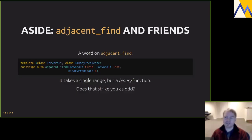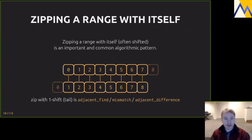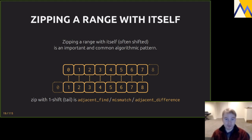As Conor's talks explain, many algorithms in the library are named in ways that obscure their true nature. adjacent_find takes a single range but a binary predicate because it's actually looping over two ranges: the range and the tail of the range. Zipping a range with itself is an important and common algorithmic pattern. adjacent_find and mismatch are basically the same algorithm; adjacent_difference is the same with output. The key difference: adjacent_find requires a forward iterator while mismatch requires only an input iterator.